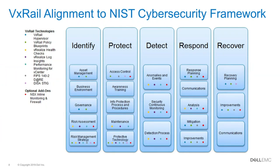Breaking this down, what are some of the ways that VxRail specifically as a product aligns into the NIST security framework? We do have a solution brief on this available on the web — search for VxRail and NIST and it should come up. VxRail has a number of ways, from a product perspective, that we have tools to help you identify things — what are the assets, what are the nodes, where are those nodes, identifying what's in the IT environment.